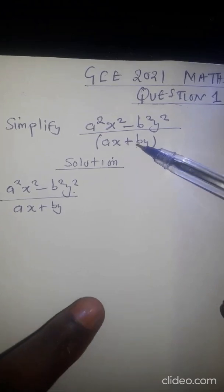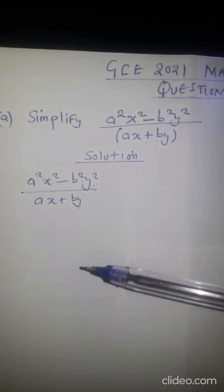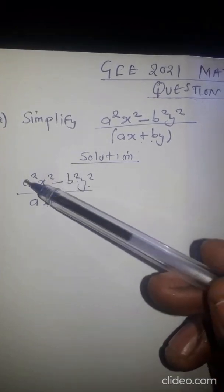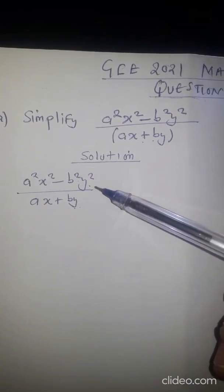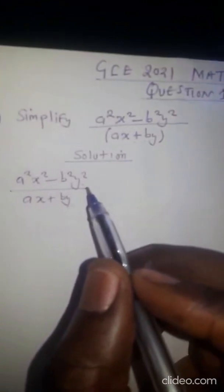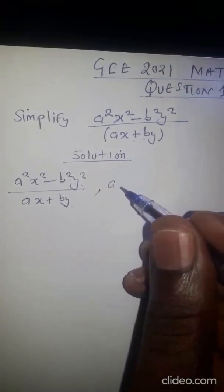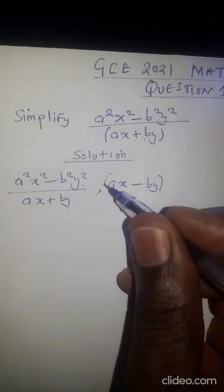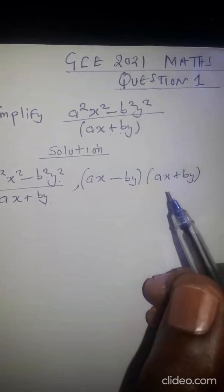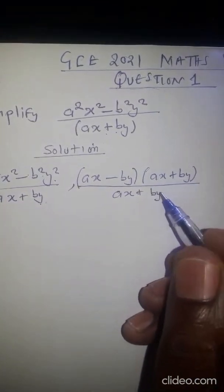How can we simplify this given algebraic expression? I've written it here. To get the solution, we need to understand that the numerator of this expression is a difference of two squares. Because of that, we are going to expand this part, and when we do the expansion we are going to get (AX − BY)(AX + BY) for the numerator, divided by (AX + BY) which is the denominator given in the question.